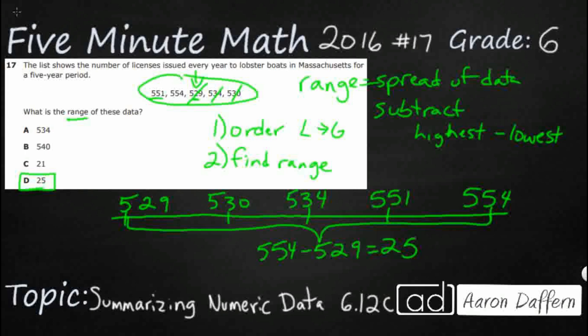Now, how do we get these other incorrect answers? Well, in case you haven't found it by now, this 21 is probably going to be our most chosen incorrect answer. Take a look at this 21. Because if I didn't reorder my numbers, if I just took my first number, 551, and I took the last number in this list, 530, guess what you're going to get?